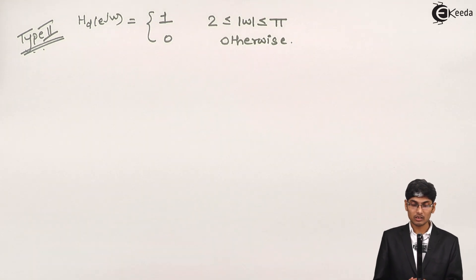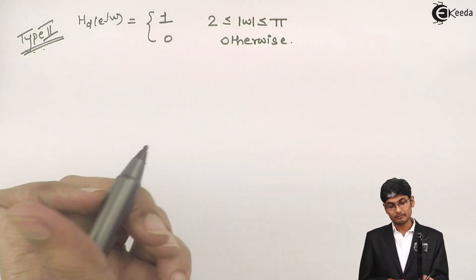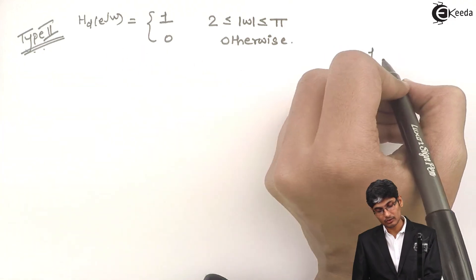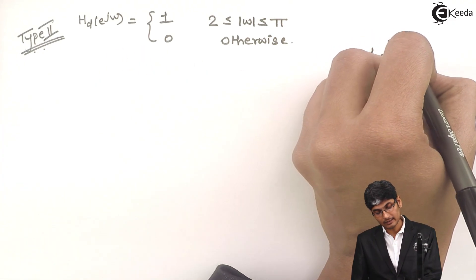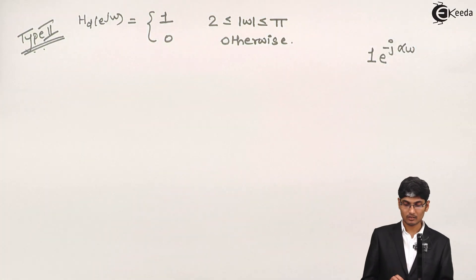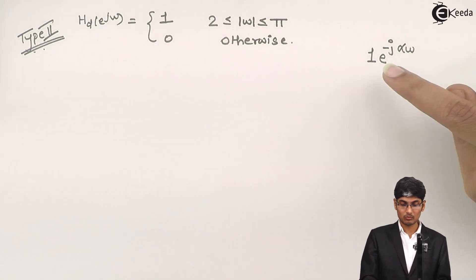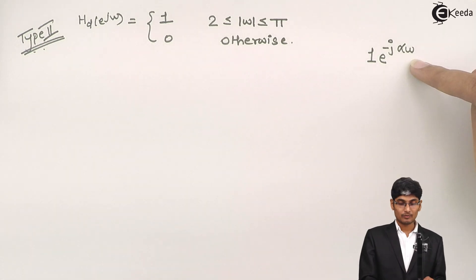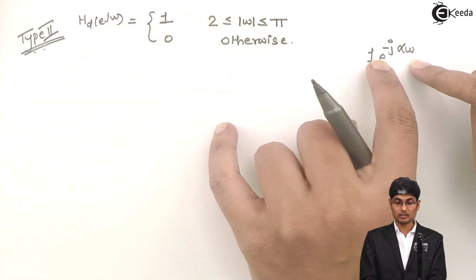Now, according to normal Type 1 problems, in Type 1 problems we receive H_d(e^jω) as 1 times e^(−jαω) — that is it. H_d(e^jω) in Type 1 problems will always be given as 1 times e^(−jαω). In Type 2, we need to bring our given H_d(e^jω) into this form.